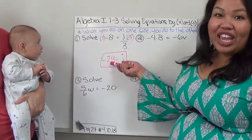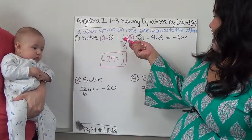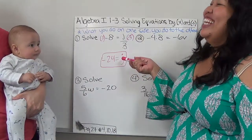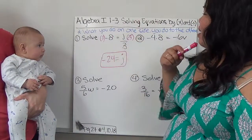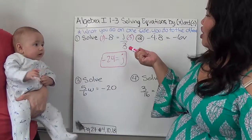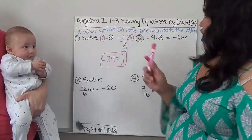If I put negative 24 in for J, and I divide it by 3, it should give me negative 8. So make sure to check your answers.